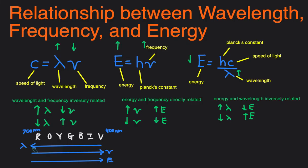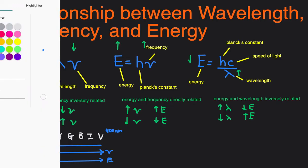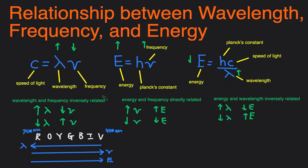Now let's take a look at one final example, just to make sure everything makes sense. Let's say we have two lights — light one and light two. Light one has a frequency of 6.1 times 10 to the 14 hertz, and light two has 1.3 times 10 to the 11th hertz.